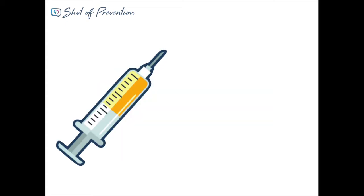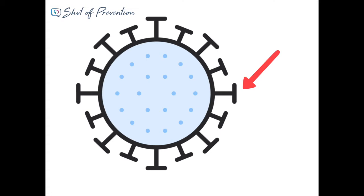The mRNA in the vaccine also codes for a protein. It codes for a spike protein that's on the outside of the coronavirus.